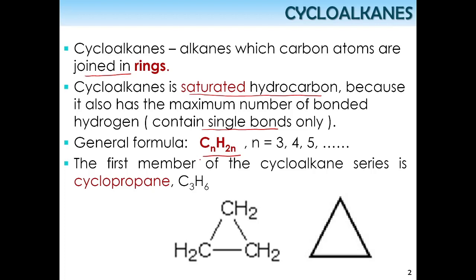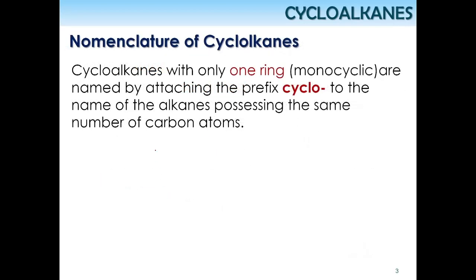The minimum requirement to have a cycloalkane is C3H6, because you cannot make a ring from one or two carbons only — so at least you need three. A cycloalkane with only one ring is called monocyclic.